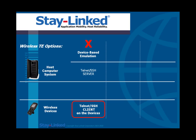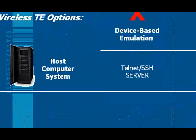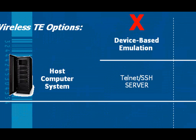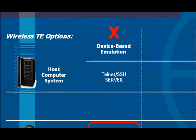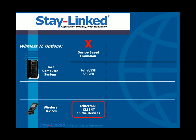Probably the most common approach we see, and the one that's the most problematic, is something we'll call device-based emulation, where you simply put a Telnet or SSH client on the user's wireless device and connect over the wireless network to run a session against a host computer system where the Telnet or SSH server software is running. This model is not a problem if you're connecting over a wire where the connection is a guarantee. In a wireless network, however, the connectivity between the Telnet or SSH client on the device and the Telnet or SSH server on the host is not a guarantee.